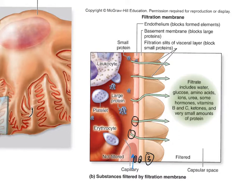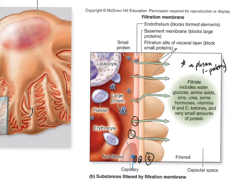What you end up with on the filtrate side resembles plasma minus the proteins. The filtrate includes water, glucose, amino acids, ions, some urea, some hormones, vitamins B and C, ketones — essentially everything found in blood plasma without the large proteins. Albumin, fibrinogen, and other large plasma proteins are too big to pass through. Very small proteins can pass through in minimal amounts.